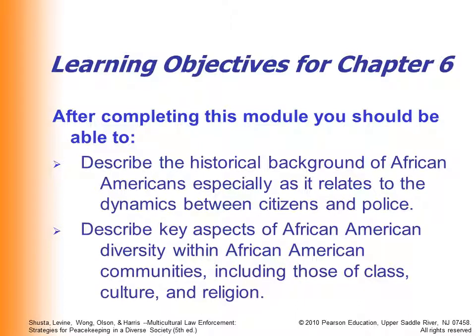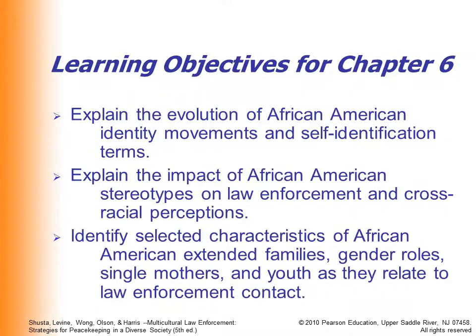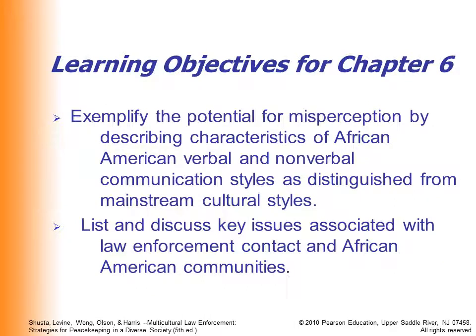Our learning objectives for this module: you should be able to describe the historical background of African-Americans as it relates to interactions between citizens and police, because that historical background has a lot to do with race relations today. We'll describe key aspects of diversity within communities including different classes, cultures, and religions. We'll explain the evolution of African-American identity movements and self-identification terms, discuss stereotypes and cross-racial perceptions, and talk about characteristics of African-American families, gender roles, single mothers, and youth as they relate to law enforcement contacts. We'll also address misperceptions about African-American neighborhoods and key issues in law enforcement contact.